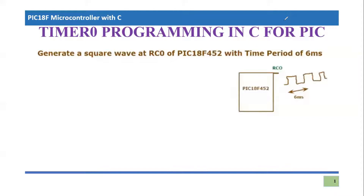For those who are already aware, they can pick up from this point. I'm going to take an example program where we are asked to generate a square wave at RC0 pin of the PIC 18F452 with a time period of six milliseconds. Since it is a square wave, it will turn on and off for equal amounts of time — three milliseconds on and three milliseconds off, producing positive and negative cycles from the RC0 pin.